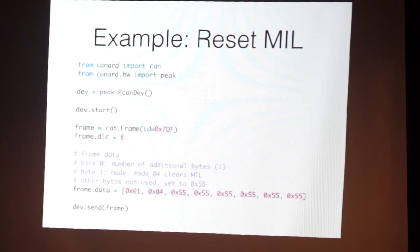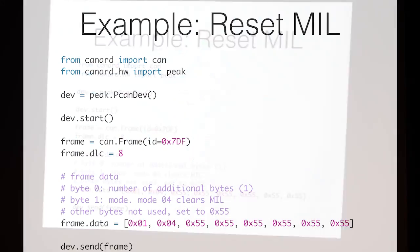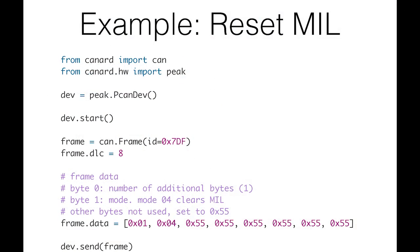So how about we clear the check engine indicator lamp? Another code example: create the device, start it up — you can literally find this specification on Wikipedia, it's very well documented. The frame ID is 0x7DF. The first byte says how many bytes follow that are valid, and the second byte is the mode. Mode 0x04 is clear fault codes. Send that message and the fault codes all go away.